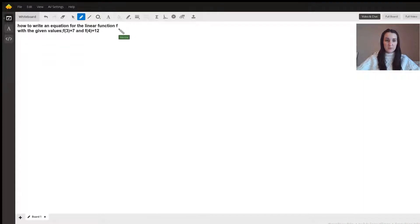How to write an equation for the linear function f with the given values f(3) = 7 and f(4) = 12. First, note that the number in brackets represents x and the other number represents y.